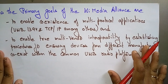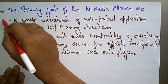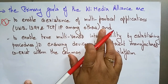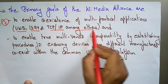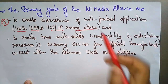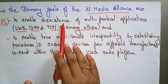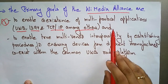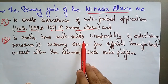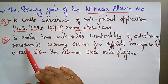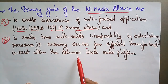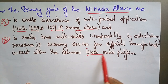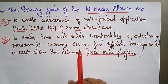The primary goals of the wireless media alliance are: first, to enable coexistence of multi-protocol applications like UWB, 1394, NTCP, and IP among others; and second, to enable true multi-vendor interoperability by establishing procedures ensuring devices from different manufacturers coexist within common ultra wide band radio communication platforms.